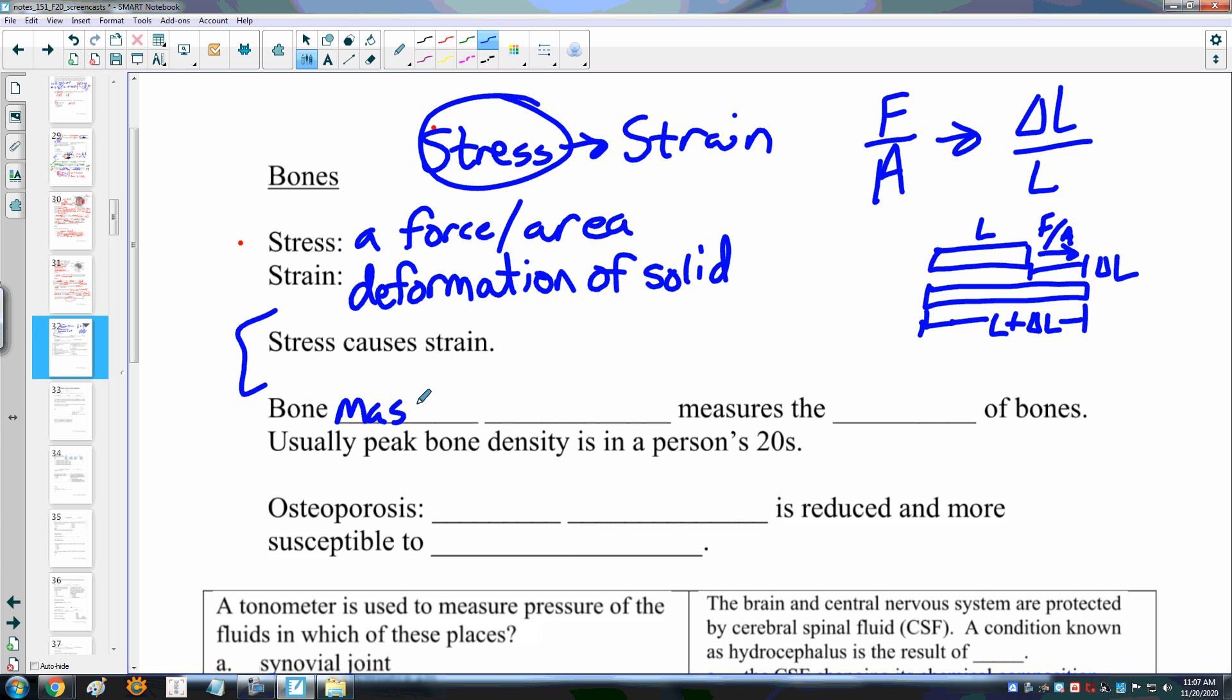Bone mass density measures the strength of bones. Usually, peak bone density for a person is in their 20s. And osteoporosis, bone density is reduced and more susceptible to breakage.